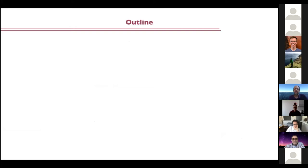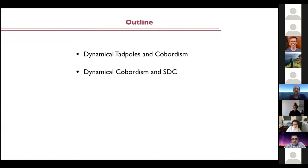Let me sketch the outline. I will start by discussing what I call dynamical tadpoles and what they have to do with cobordism. Then I will move on, connecting that with the swampland distance conjecture, and then I will be done.